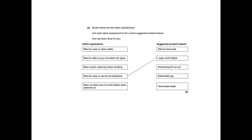First question: shown below are five key requirements — join each requirement to the correct suggested product feature; one has been done for you. This is worth four marks. Must be easy to clean safely — removable blade fits that safety point. Must be able to pour the smoothie into a glass — detachable jug. Must remain stationary when working — silicon feet pads. Interlocking lid cut out is fairly obvious. And finally, must not allow users to touch blades when switched on — the lid that protects that.